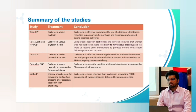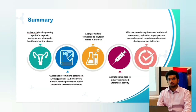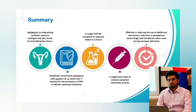In summary: carbutocin is a long-acting synthetic oxytocin analogue that stimulates the uterus. Guidelines recommend 100 micrograms IV bolus over 1 minute for prevention of postpartum hemorrhage in elective caesarean section deliveries. It has a longer half-life than oxytocin — 4 to 10 times — making it a drug of choice. A single bolus dose achieves sustained uterine contraction over 1 to 2 hours and is effective in reducing the use of additional uterotonic drugs, reducing postpartum hemorrhage, and reducing the need for transfusion in the postpartum period. Thank you.